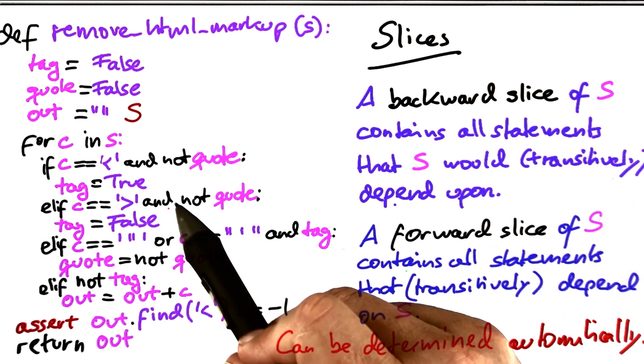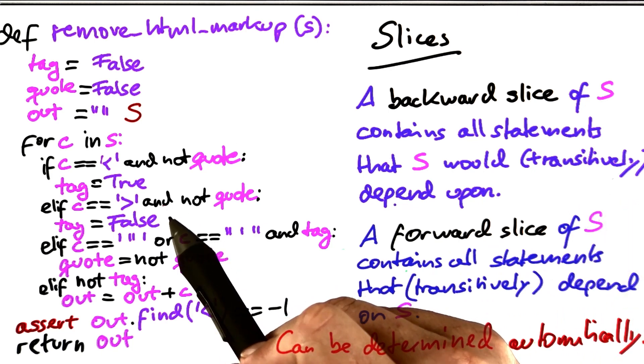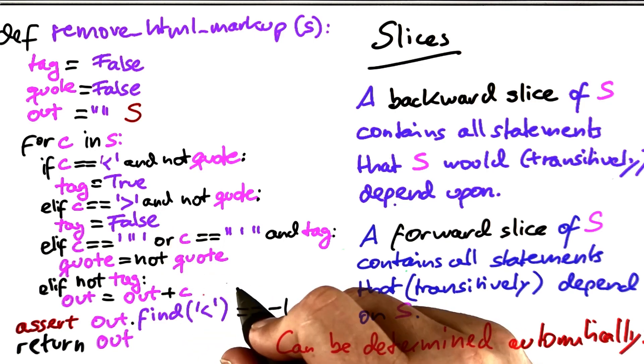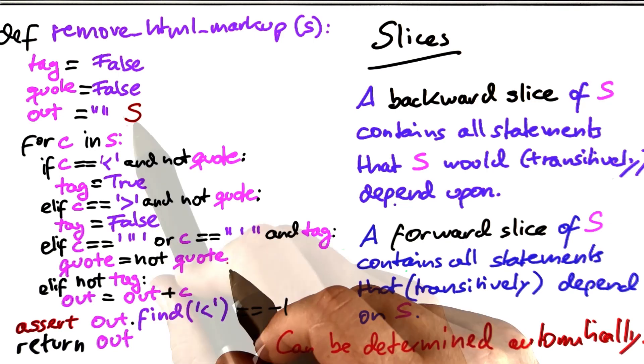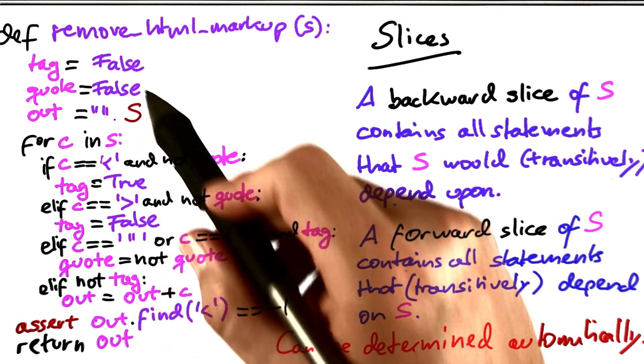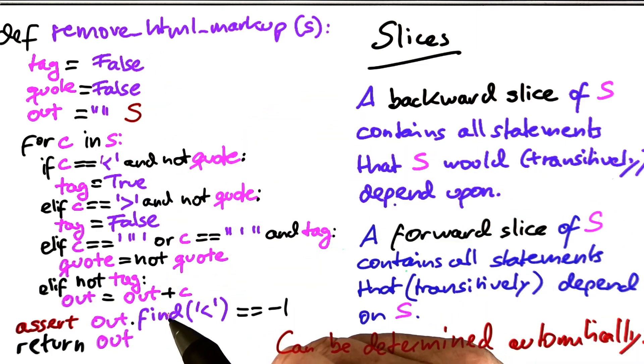Such static slicing tools, therefore, can help you focus on specific parts of the program, telling you the possible influences either of a statement or the possible influences towards a statement.